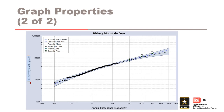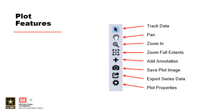Axes and titles can also be edited directly on the Graphical Results tab. Click on the text to edit. Other plot features available on the Graphical Results tab include the ability to add annotations and save the plot as an image.